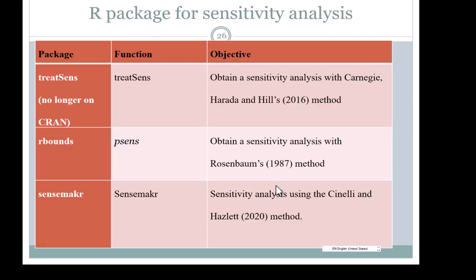There are several packages implementing different sensitivity analysis methods. The treatSens package implements the Carnegie-Harada-Hill method, but you would have to download it from GitHub as it is not currently available on CRAN. The rbounds package implements the Rosenbaum 1987 method. The more recent sensemakr package implements the sensitivity analysis proposed by Cinelli and Hazlett. This concludes the overview of what you would do to conduct a propensity score analysis.